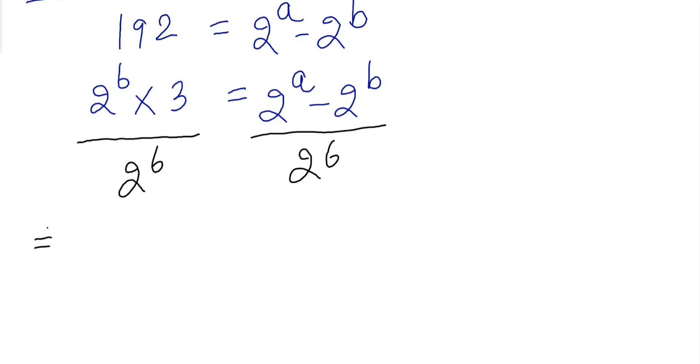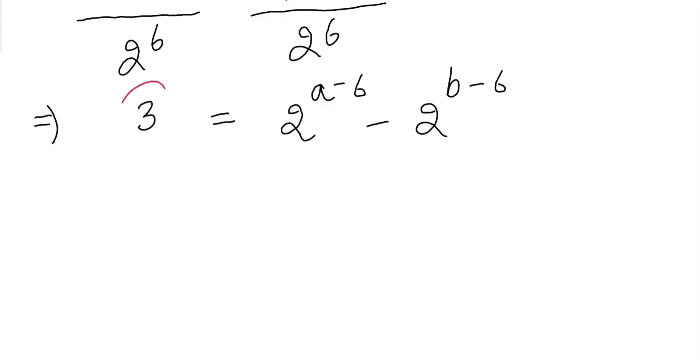we will see 3 equals 2^(a-6) minus 2^(b-6). You can notice 3 is odd, while power of 2 is always even, and this is power of 2 which is always even.